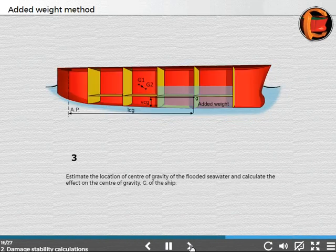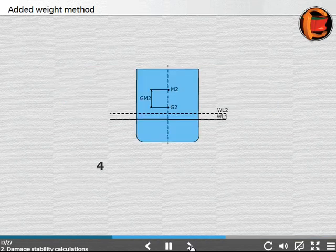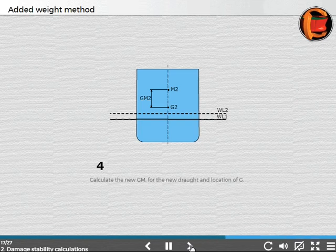Step 3: Estimate the location of center of gravity of the flooded seawater and calculate the effect on the center of gravity G of the ship. Step 4: Calculate the new GM for the new draft and location of G.